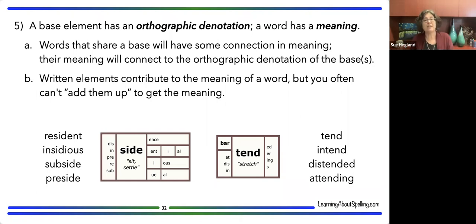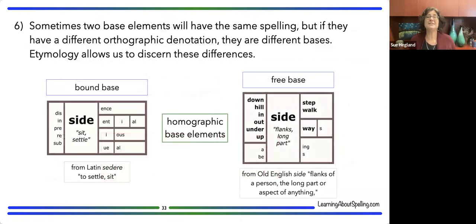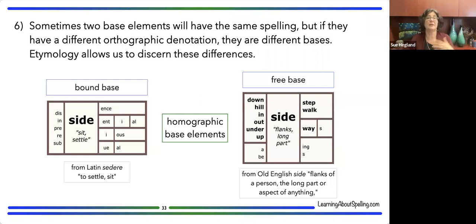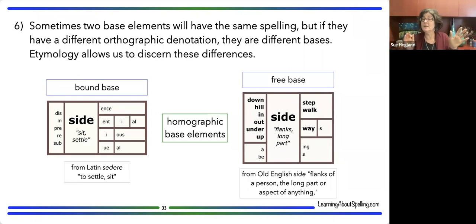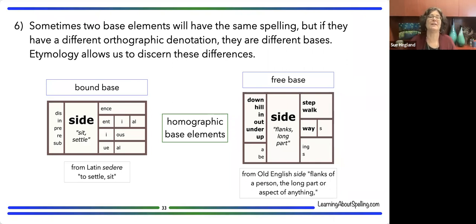Words that share a base will have some connection in meaning, linked by a thread — sometimes thin but lovely — to the orthographic denotation. Written elements contribute to the meaning of a word, but you often can't simply add them up to get the meaning. That doesn't mean morphology isn't working — it means we need to rethink our perspective on written morphology. The fact that we can't derive word meanings compositionally is not a failure; it's just how written morphology operates.